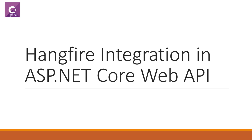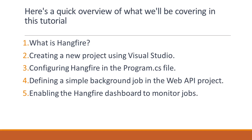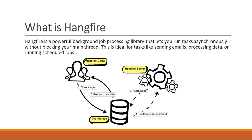Hello everyone, welcome to CSOP Space. Today we are going to dive into integrating Hangfire with ASP.NET Core Web API. We will cover the introduction to Hangfire, setting up a new ASP.NET Core Web API project, configuring Hangfire, creating background jobs, and monitoring the dashboard for those jobs. Hangfire is a powerful background job processing library that lets you run tasks asynchronously without blocking your main thread, ideal for tasks like sending emails, processing data, or running scheduled jobs.